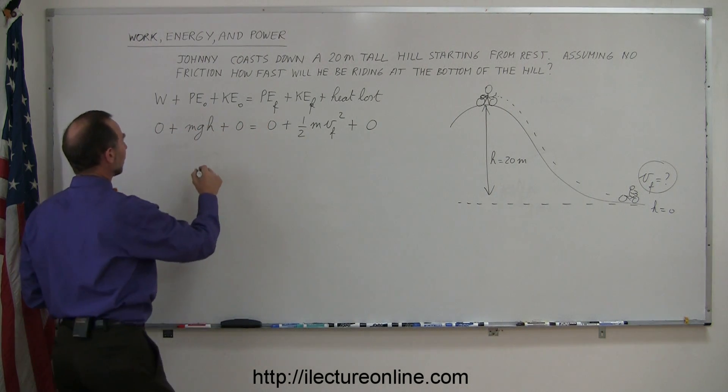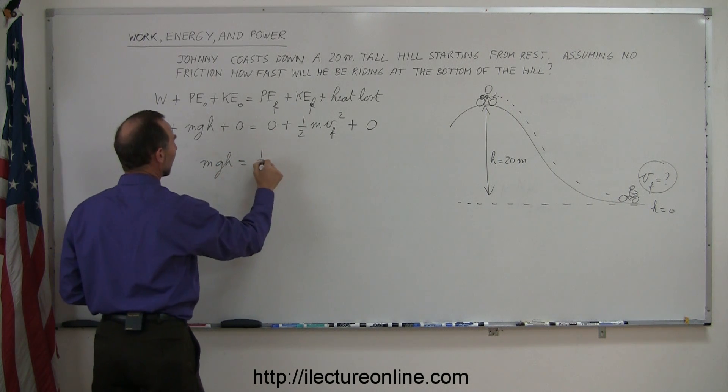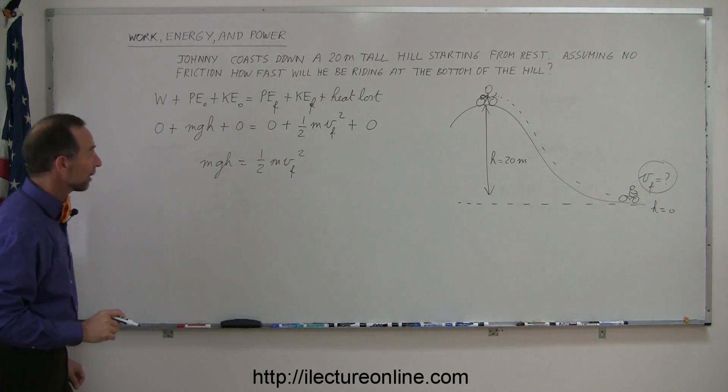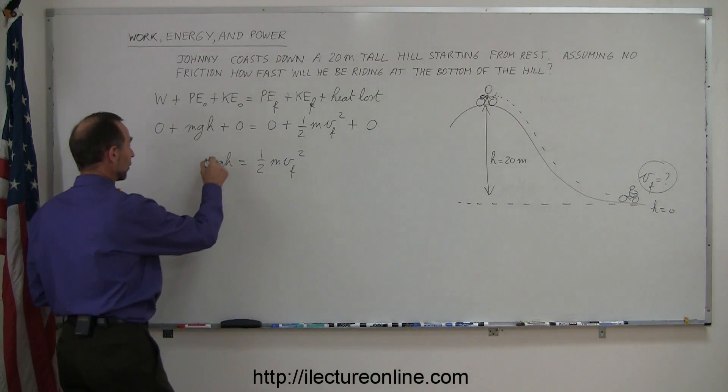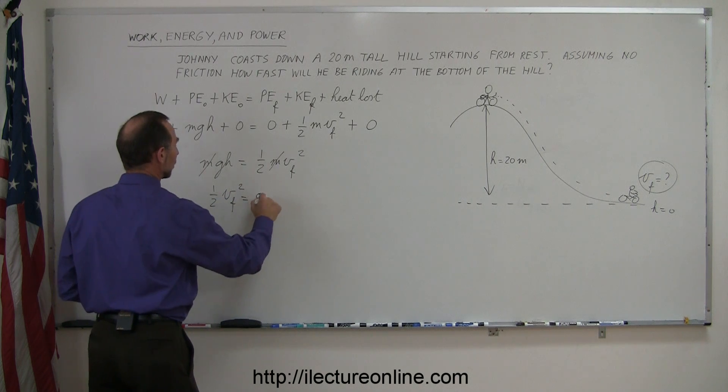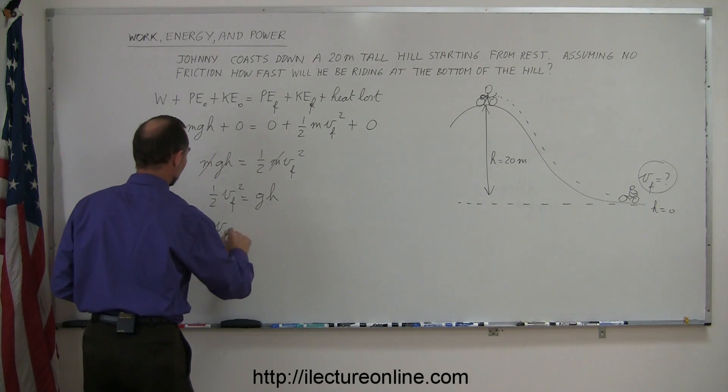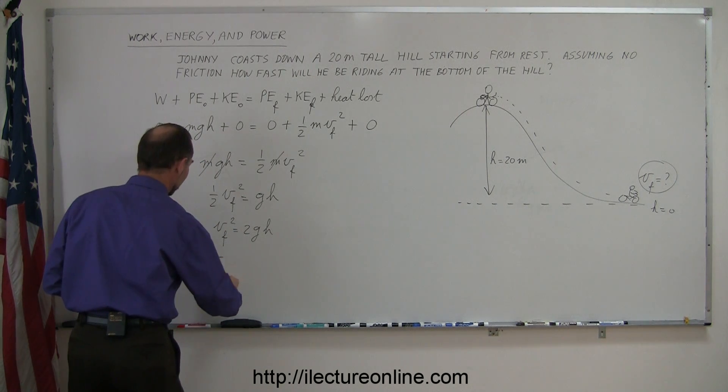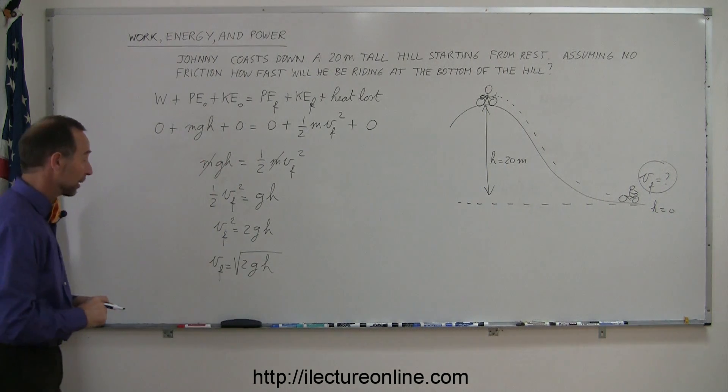And so this equation then boils down to MGH, the initial potential energy Johnny had equals one-half MV final squared, the final kinetic energy that Johnny had when he gets to the bottom. Now we simply have to solve the equation for V. We can right away see that mass cancels out on both sides. I'm going to turn the equation around, put one-half V final squared equal GH. Then I'm going to multiply both sides by 2. So we have V final squared equals 2GH. Then I take the square root of both sides, so I can say that V final is equal to the square root of 2GH. And all we have to do now is plug in what those numbers are.